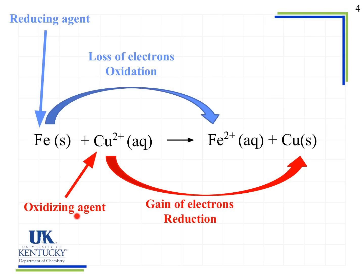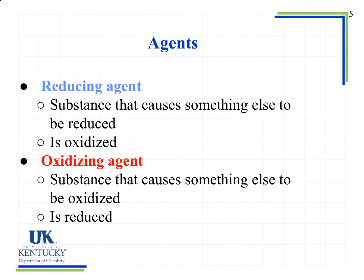The oxidizing agent causes another species to be oxidized because it itself is being reduced. Going from copper two plus to copper zero, we see the gain of electrons and a reduction occurring. So copper two plus is the oxidizing agent. Notice that both the reducing agent and the oxidizing agent are on the reactant side — they are causing the reaction to happen. An oxidizing agent causes oxidation to happen by being reduced. To summarize: the reducing agent is itself oxidized; the oxidizing agent is itself reduced.